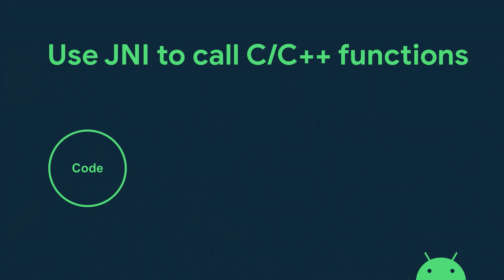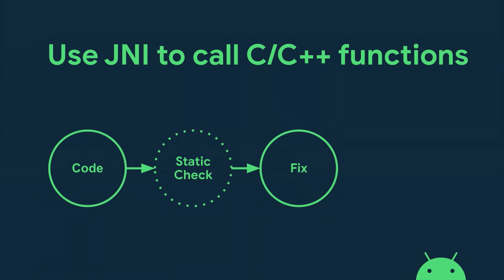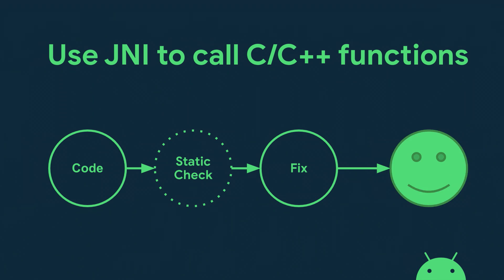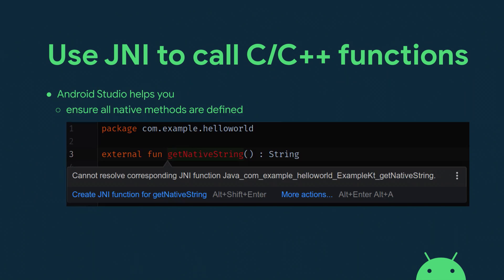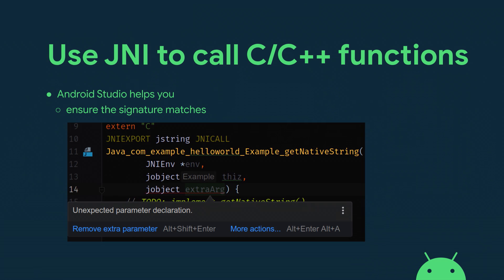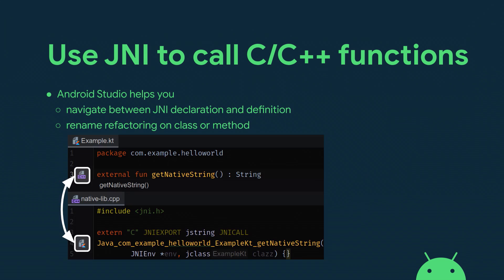Now with the expanded JNI support, the IDE highlights errors in real time as you type, and sometimes even offers suggestions to fix them automatically, making it much easier. For example, if you forget to provide a JNI implementation for a native method, it highlights an error in Kotlin. And if there's a signature mismatch — say you're providing an extra parameter in the implementation that shouldn't be there — the IDE catches that too. The IDE also understands the connection between native method declarations and implementations, offering navigation, reference search, and refactoring support.